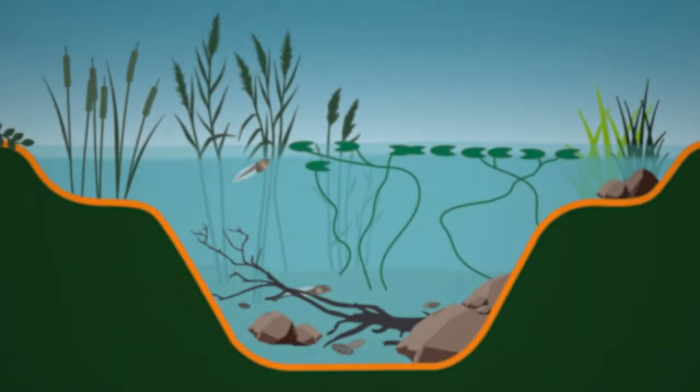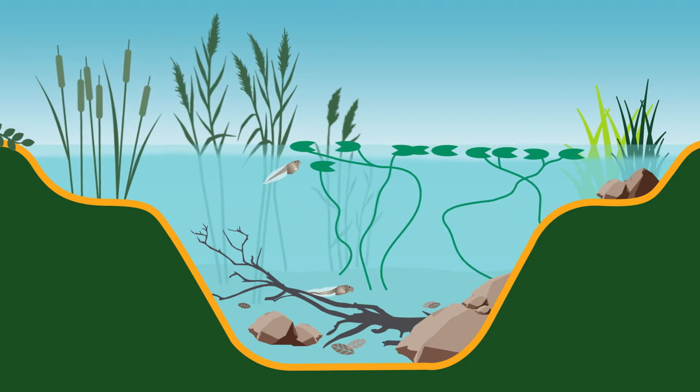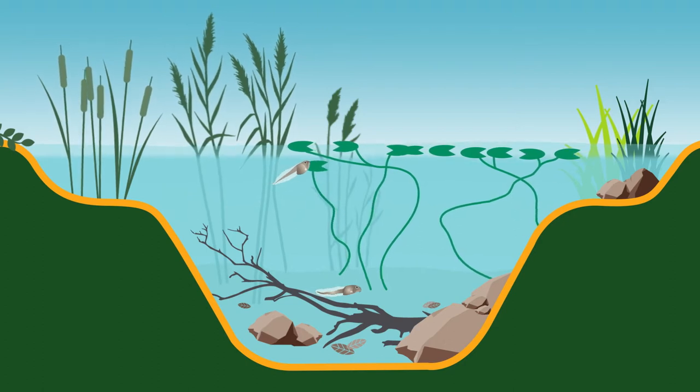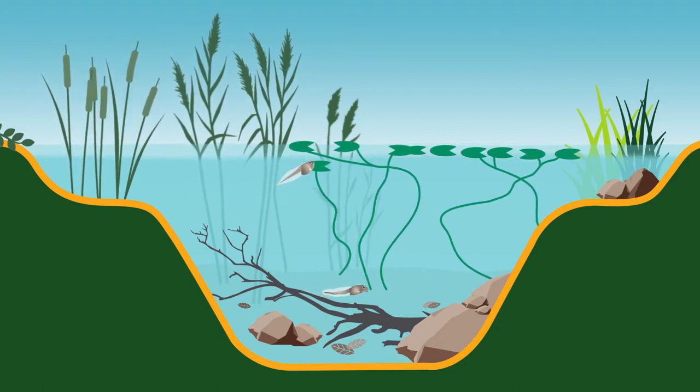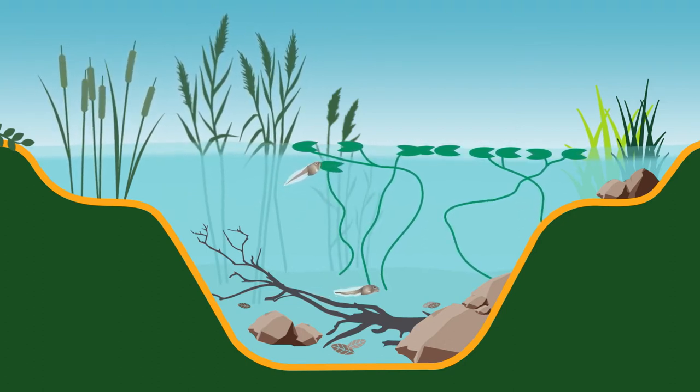A tadpole is the larval stage of the frog life cycle, so nearly all frogs start out their lives as tadpoles.